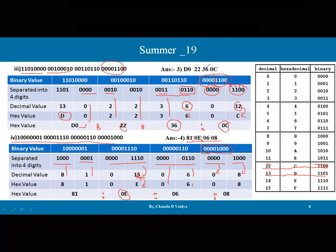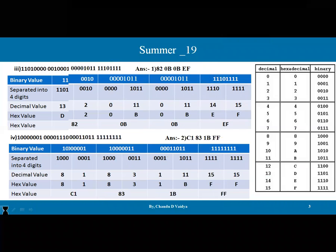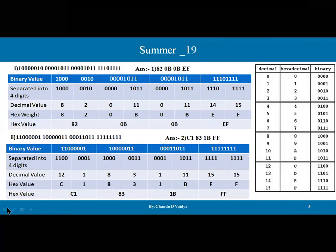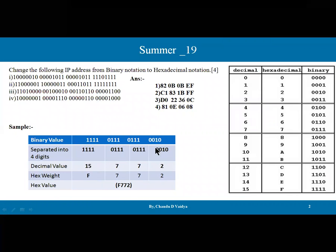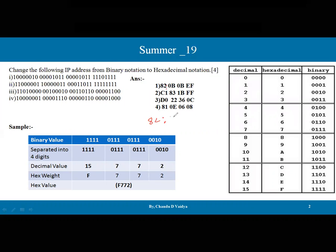In this way we can calculate and convert these binary IP addresses into hexadecimal addresses. The sample calculation is shown here. We can write the result with dots or colons — for example, 82:0B:0B:EF is also acceptable since they are asking for hexadecimal notation. Either format is fine.